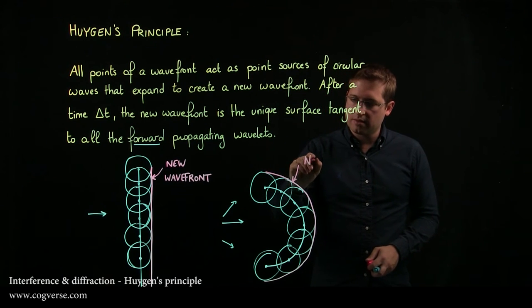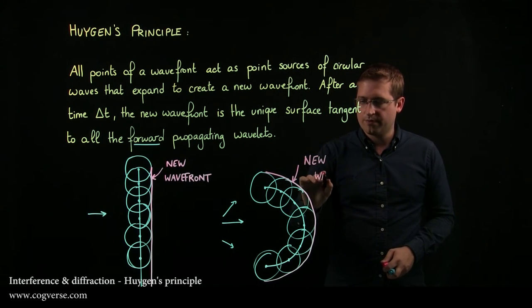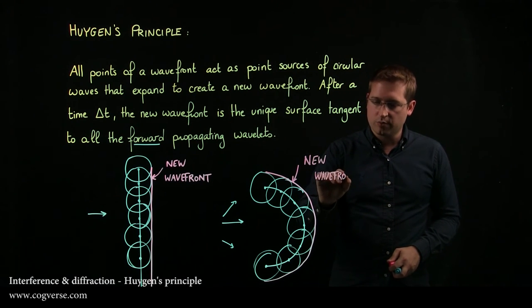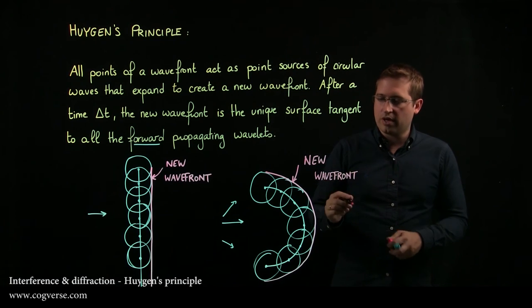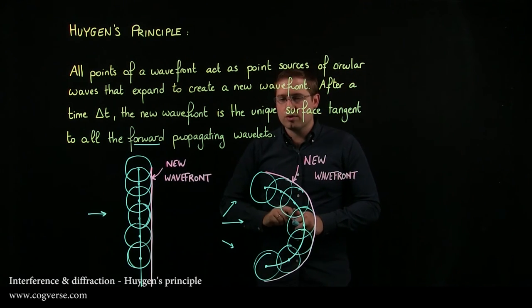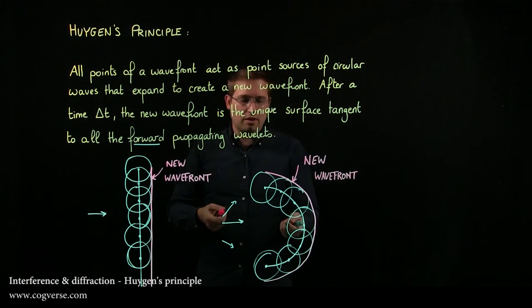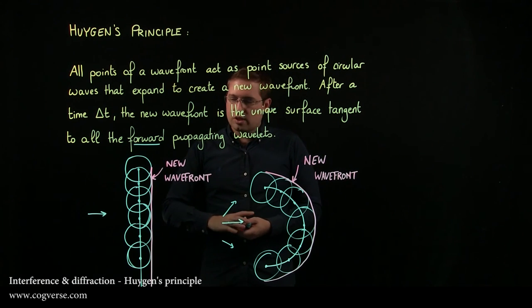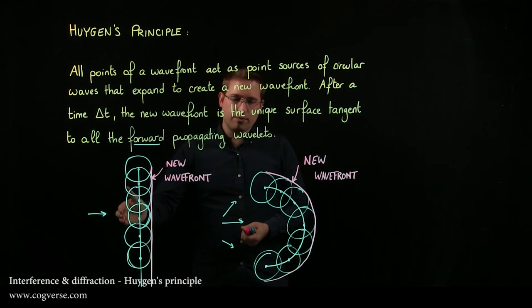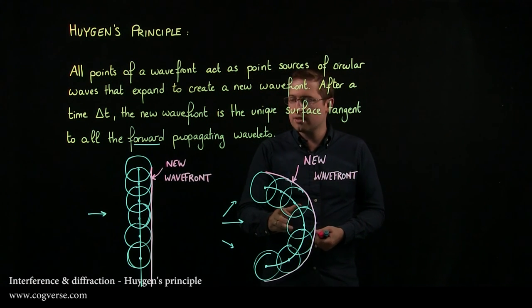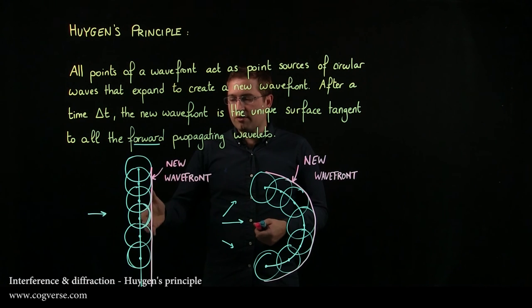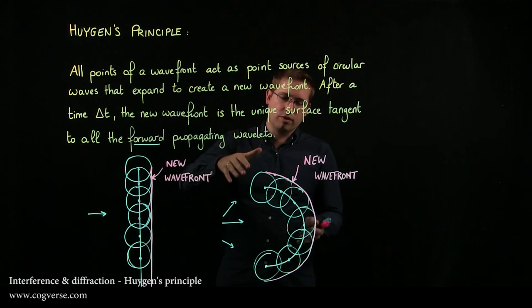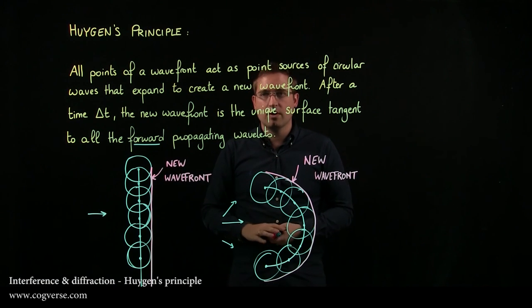This is the new wavefront. So that is all that Huygens' principle is trying to say. It allows you to construct the new wavefront if you know the old one, and we're going to see that to get from a wavefront like this one, for example, to some wavefront like this, the wave can be diffracted, and then you go from this type of wavefront to more of a circular or spherical wavefront.